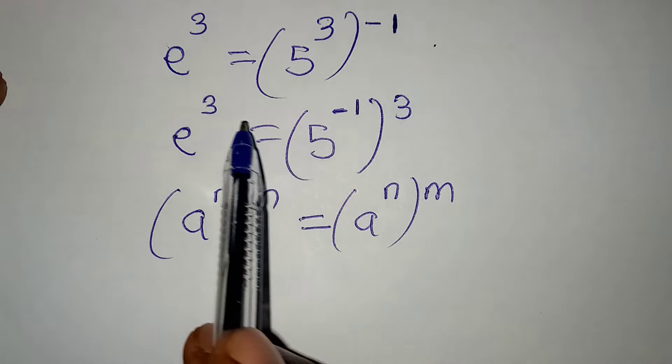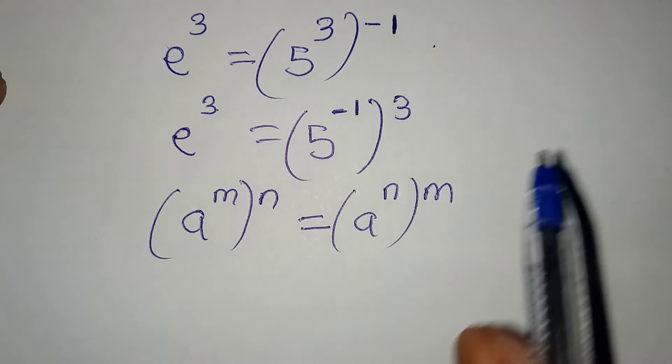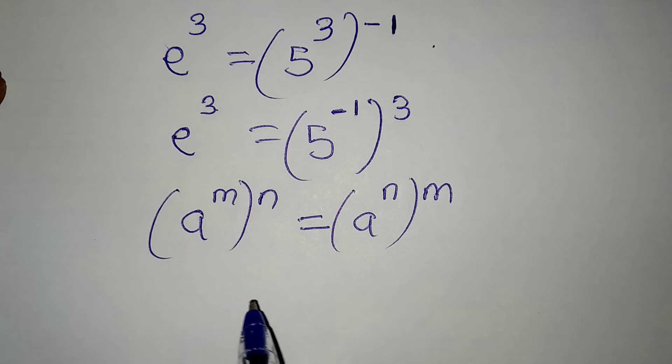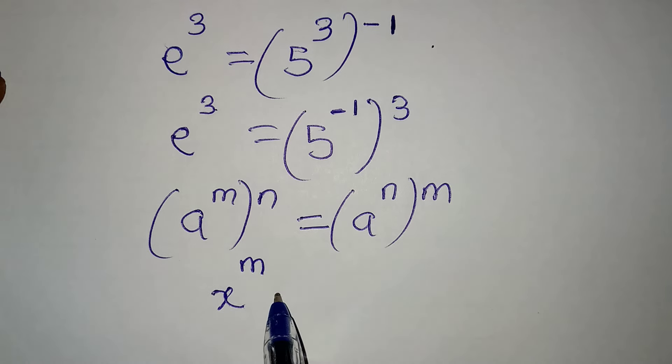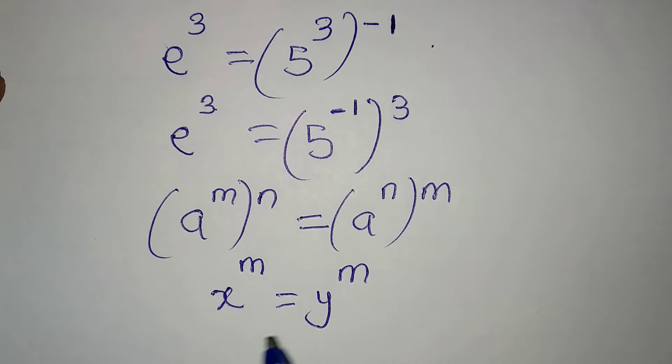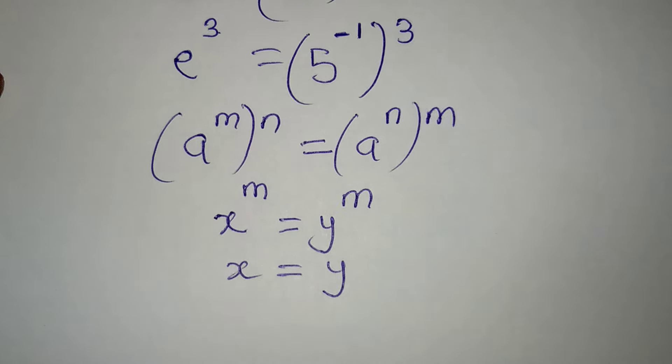So from here now, we have the same powers. And then the law also says that if you have x to the power of m to be equal to y to the power of m, this means that x is equal to y because the powers are the same, right?